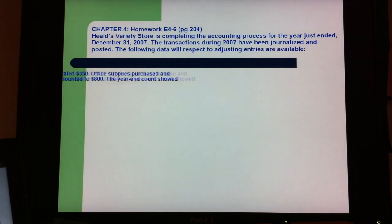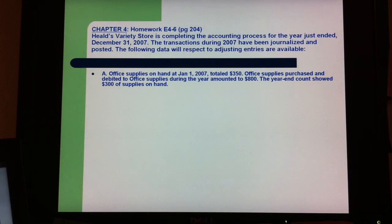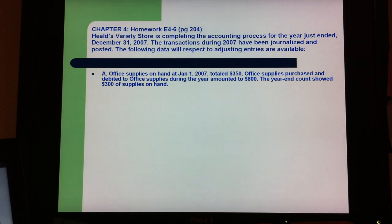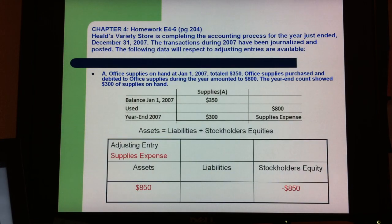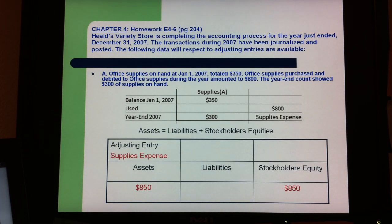Part A: Office supply on hand at January 1st, 2007 totaled $350. Office supplies purchased and debited to office supply during the year amounted to $800. The supply expense calculation results in $850 as assets and $850 on stockholders' equity.